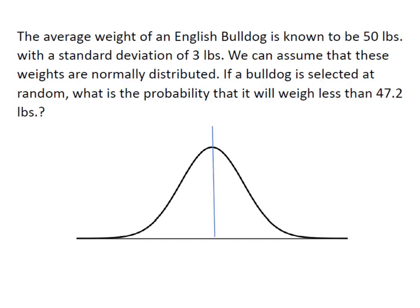We have the average weight of an English Bulldog known to be 50 pounds with a standard deviation of 3 pounds. We're going to assume that the weights are normally distributed, and if a Bulldog is selected at random, we want to know the probability it will weigh less than 47.2 pounds.